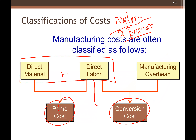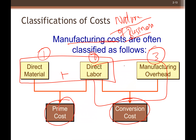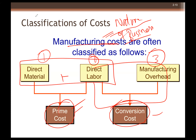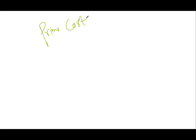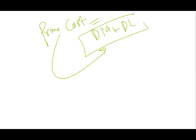We can also classify manufacturing costs as prime cost and conversion cost, based on the nature of the business. Prime cost equals direct material plus direct labor. Conversion cost equals direct labor plus manufacturing overhead. So manufacturing costs have three components — direct material, direct labor, manufacturing overhead — and can also be grouped as prime cost or conversion cost.